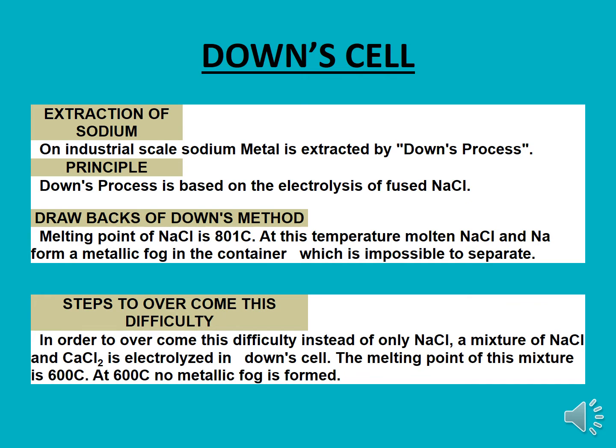There are some drawbacks of the Down method. The melting point of sodium chloride is 801 degrees centigrade, and at this temperature molten NaCl and sodium form a metallic fog in the container which is impossible to separate. To remove this drawback, we add a mixture of NaCl and calcium chloride into the electrolytic cell. The melting point of this mixture is 600 degrees centigrade, and at this temperature no metallic fog is formed, so we can separate the sodium metal more easily.